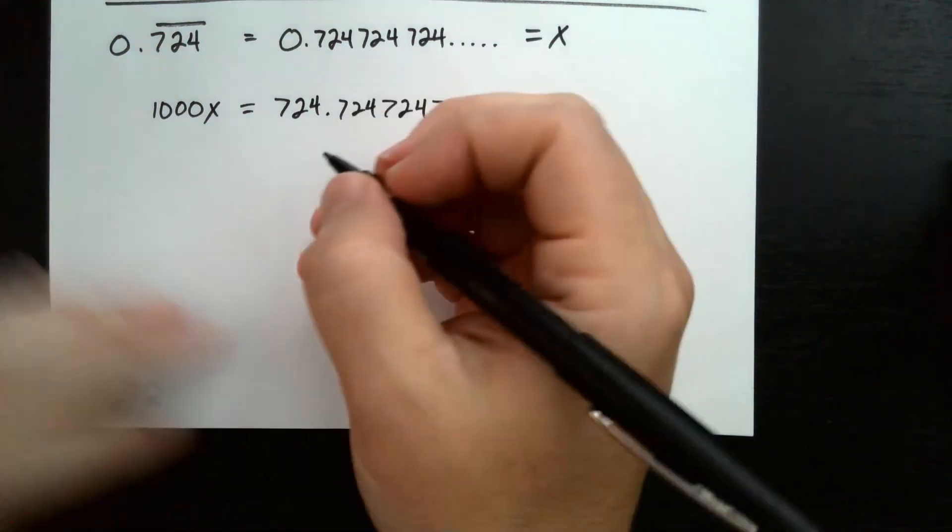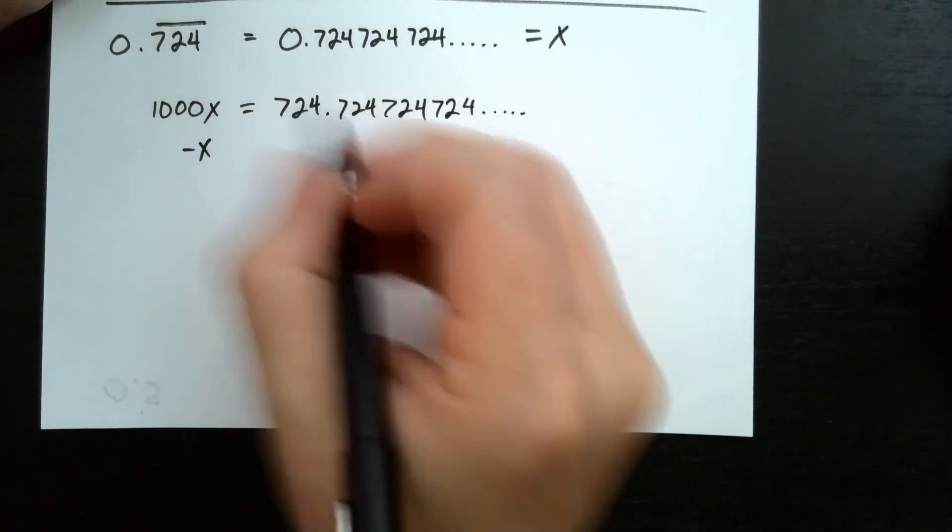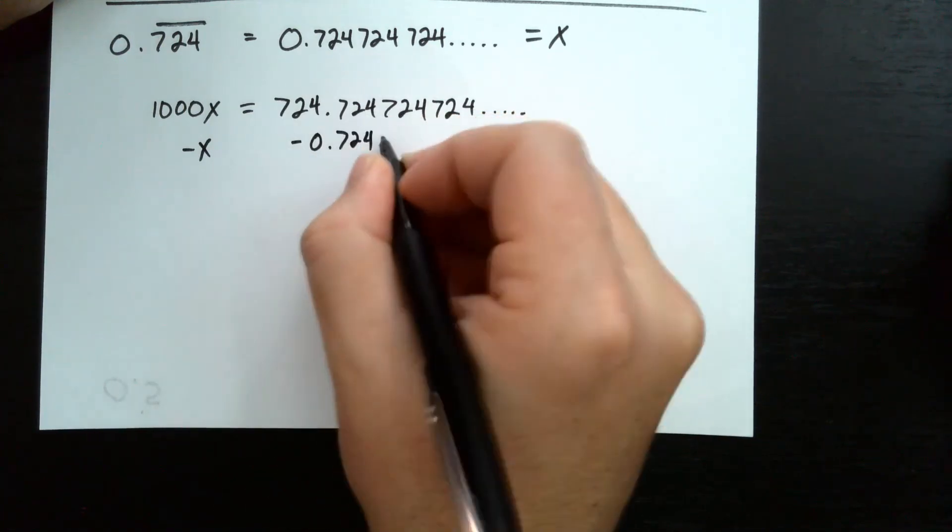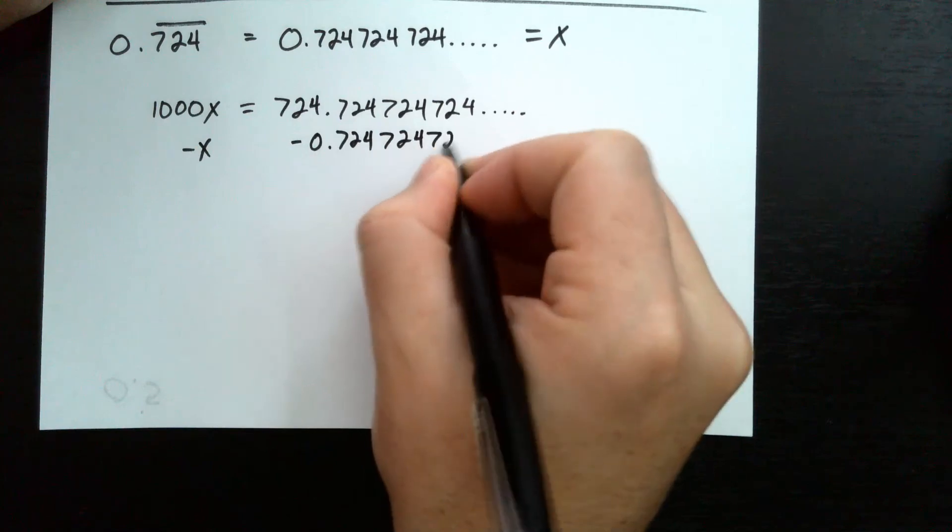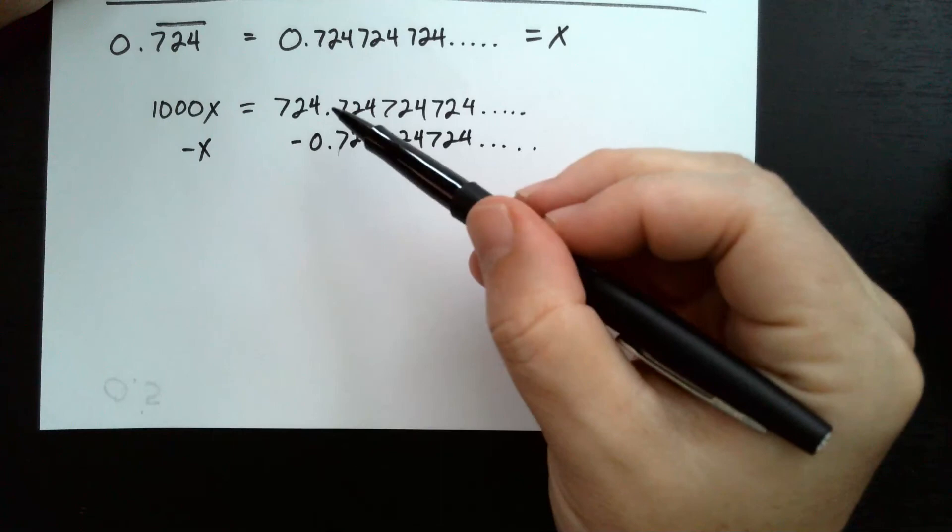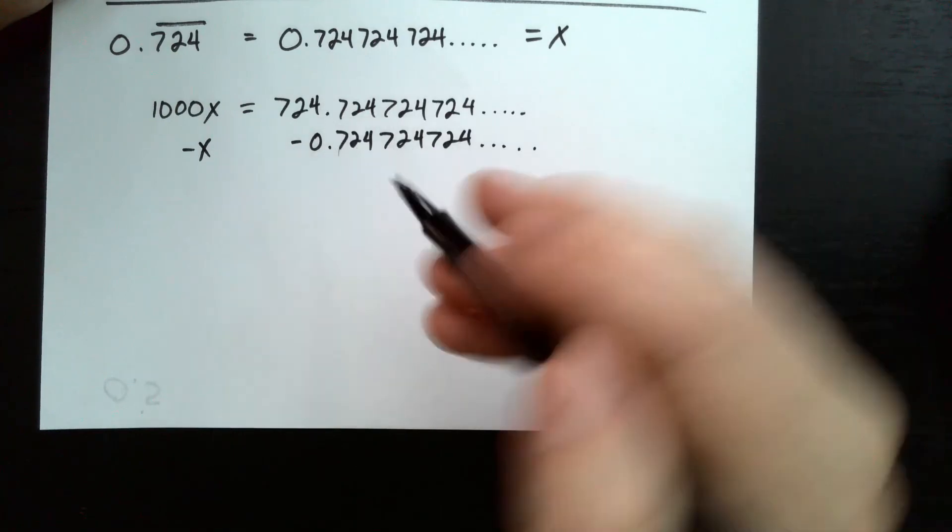And yet again, I'm going to subtract the x, which means I'm going to be subtracting 0.724, 724, 724 repeating, and then all these cancel, and we're left with 724 on the right.